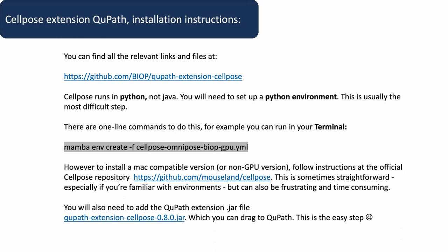You will also have to install the Java extension just like you did for Stardust — that's the easy bit, just drag it onto QPath. You will need to point QPath to where Python exists — that's also straightforward. I didn't manage to get it running on MacBook, but I did manage on Linux with GPU, which was relatively straightforward. If it works, it's really easy; if it doesn't, it can take a while to debug. I've used it extensively in Python — in my opinion, since it's a Python workflow, you might as well run it from Python.